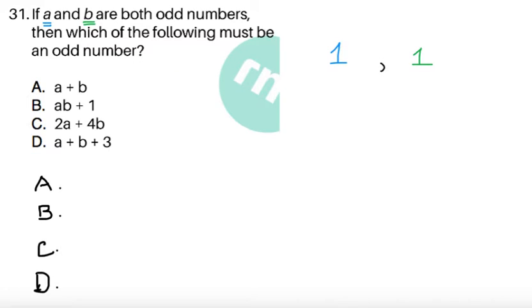For item 31, if A and B are both odd numbers, then which of the following must be an odd number. Now this item involves variables. Now a common trick here is we can just simply let values of A and B be some values that are odd because it's going to satisfy.